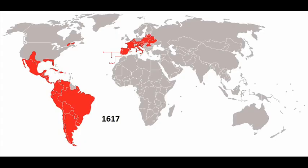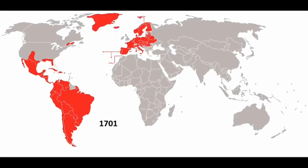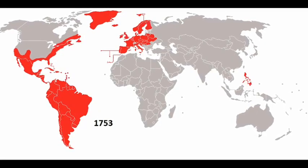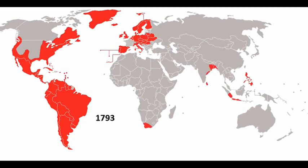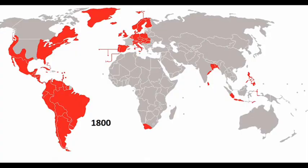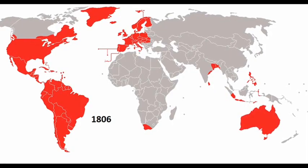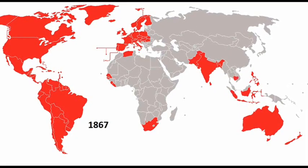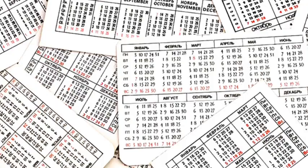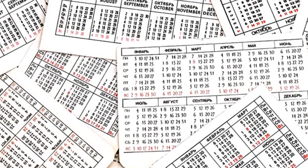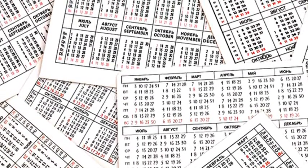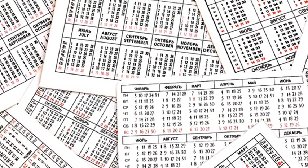Despite this slow uptake, by the end of the 18th century most of the countries of Western Europe, including the sizeable British Empire, had switched to the Gregorian calendar to ease international trade. The Gregorian calendar is now the most widely used calendar in the entire world.